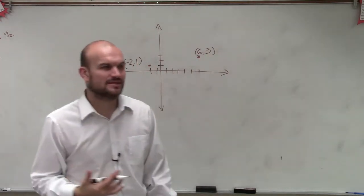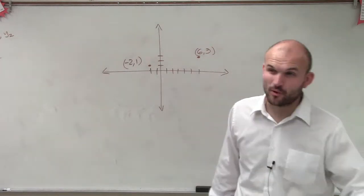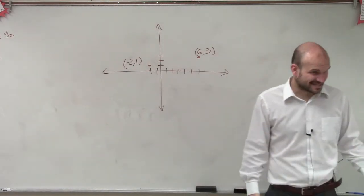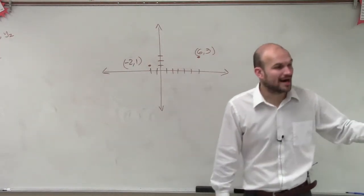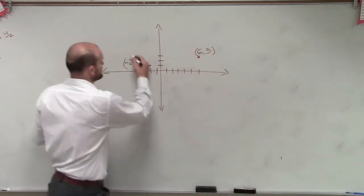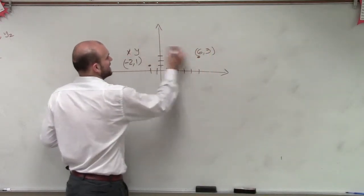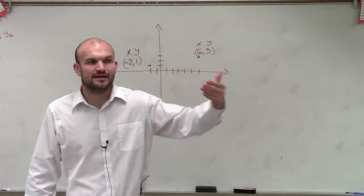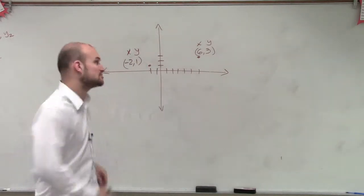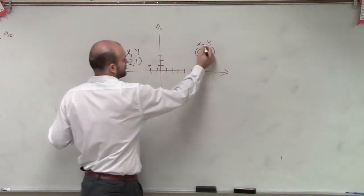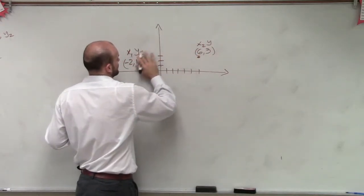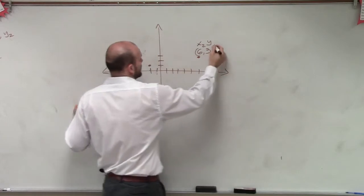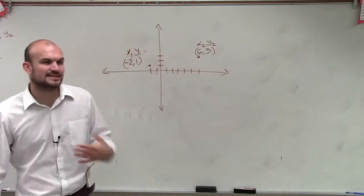So last time what we talked about was to find the distance, we labeled these x and y. So when we labeled them x and y, we didn't really like the x and y system though, because then we couldn't differentiate between the x's or the y's. So we gave them little subscripts. So we said, this is y1, that's y2. This is x1, and this is x2.